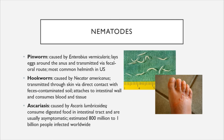Ascariasis is caused by Ascaris lumbricoides, an extremely common helminthic infection, with an estimated 800 million to 1 billion people infected worldwide. Symptoms are typically mild and may not be recognized until a worm emerges from the body. It consumes digested food in the intestinal tract and usually does not produce major symptoms.